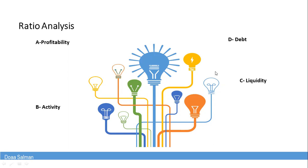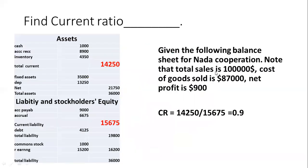Let's look at the first example: a balance sheet consisting of two sides — assets, and liabilities plus stockholders' equity. We can see the components of total current assets, net fixed assets, and on the other side, liabilities and stockholders' equity. We'll find the current ratio, which is basically dependent on current assets compared to current liabilities.